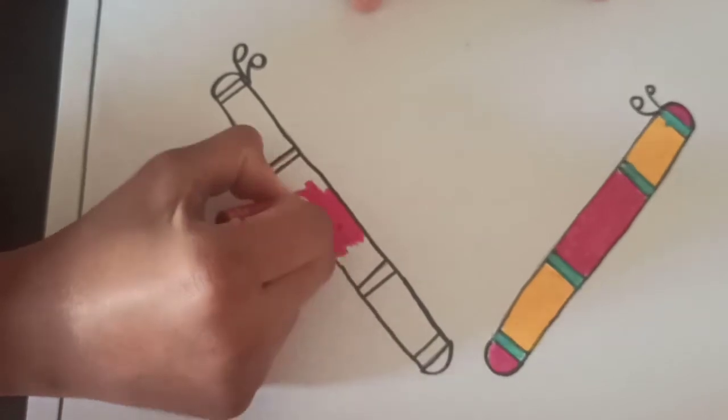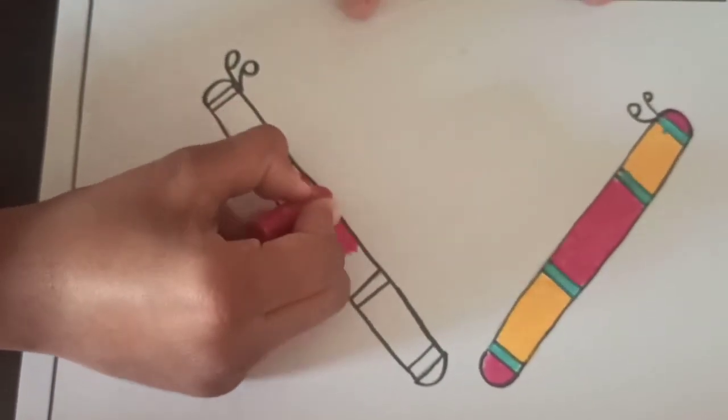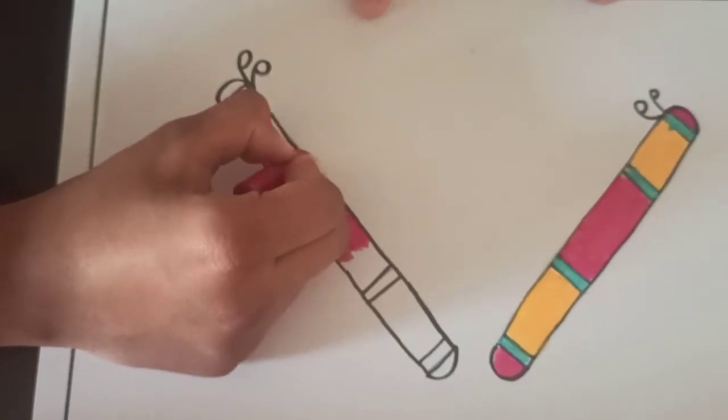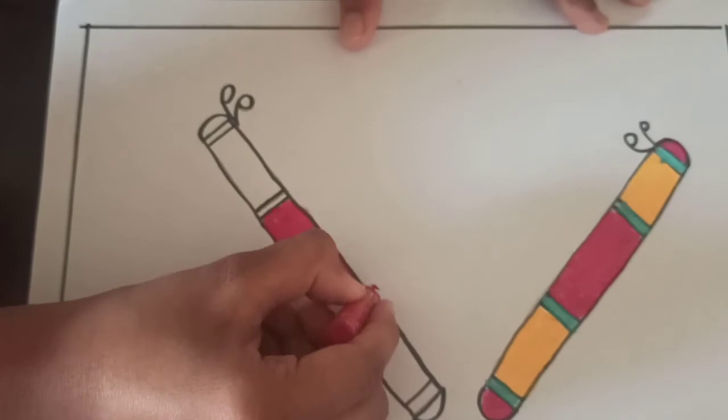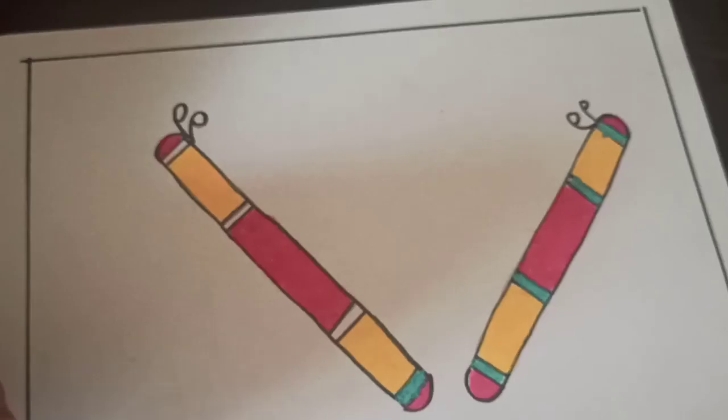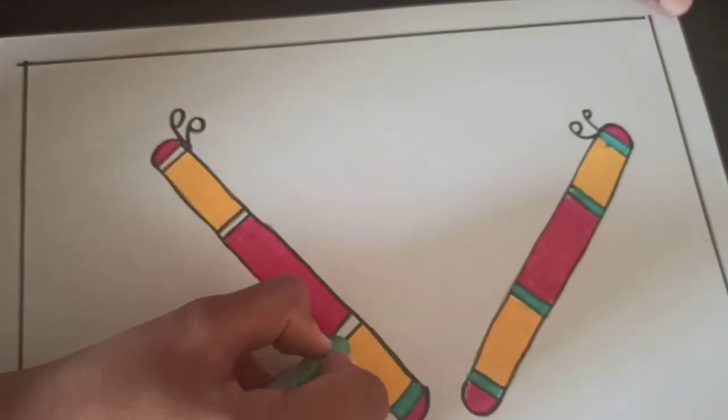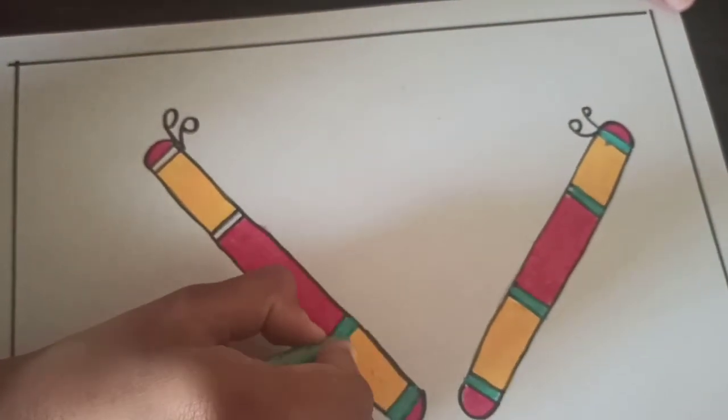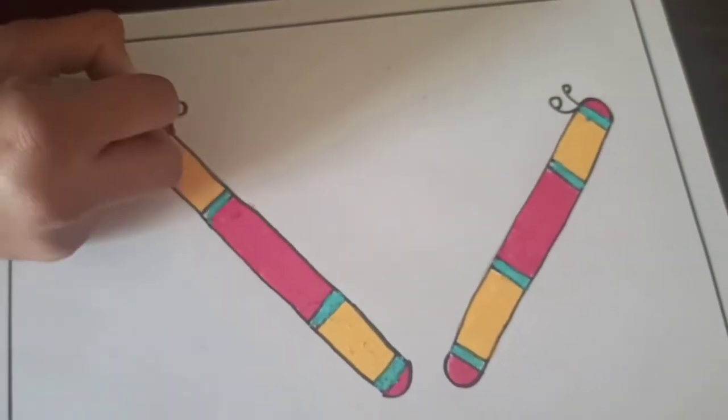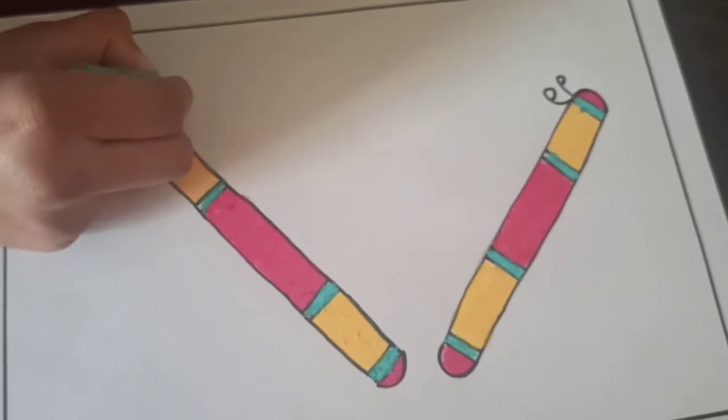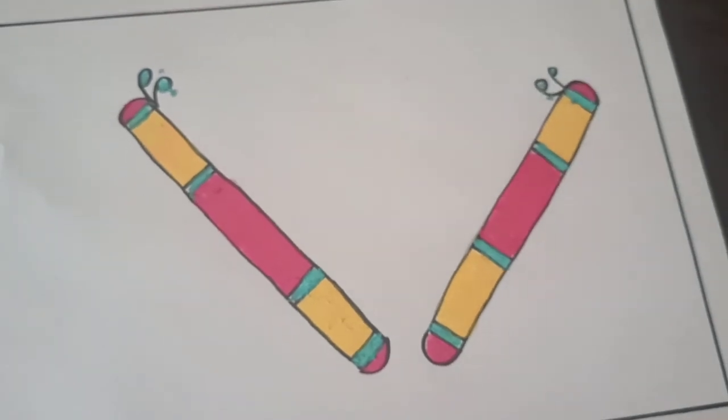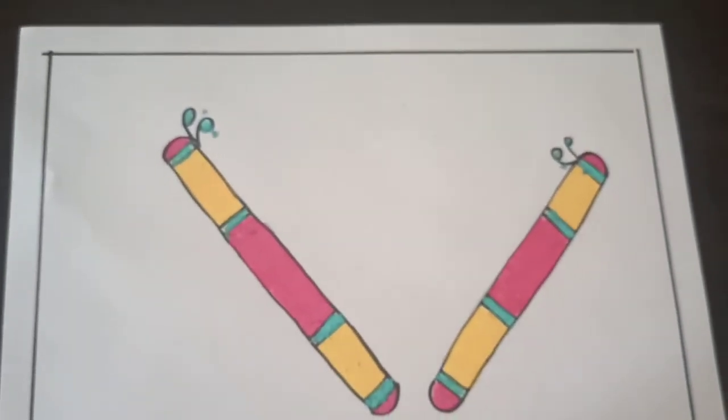This way. And fill the color in the slipping manner. And please don't go outside the border. Now for this middle two lines, fill one different color. This way. And here also. And like this. Our dandiyas sticks are ready.